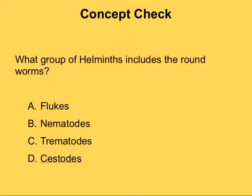Before we conclude this chapter, let's have a quick concept check. What group of helminths includes the roundworms — is it flukes, nematodes, trematodes, or cestodes? Well, flukes are flat and are also known as trematodes, so we can take those both off the list. We know that cestodes are also flatworms, so that leaves us with the nematodes. This concludes our chapter on eukaryotic microbes — be sure to get started right away on your LearnSmart.